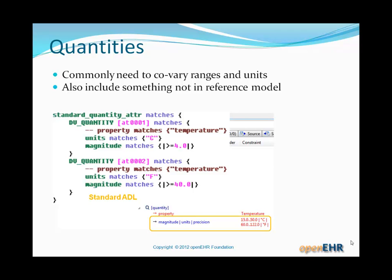So we could do that in standard ADL, and it would be the same kind of thing as we saw before. Two alternative quantity values that would be allowed to match that attribute, or those same data would be allowed to match that part of the archetype under the attribute standard quantity attr, as you can see there.